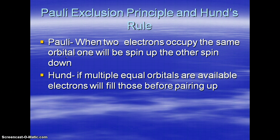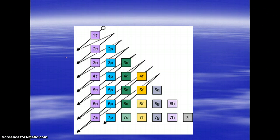Hund's rule says that if multiple orbitals are available — like the P's, where there are three different P orbitals — each of the orbitals gets one electron before anybody gets two electrons. So those three P orbitals each get one electron before anybody gets a second electron. I think about it like a school bus: when you get on the school bus, you go to the seat that's empty first before looking for a seat that already has one person in it.